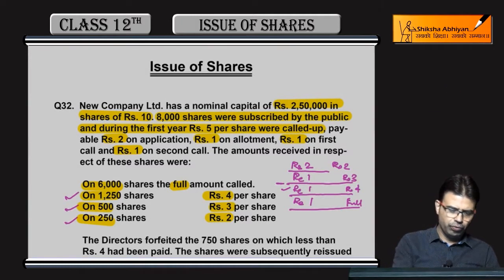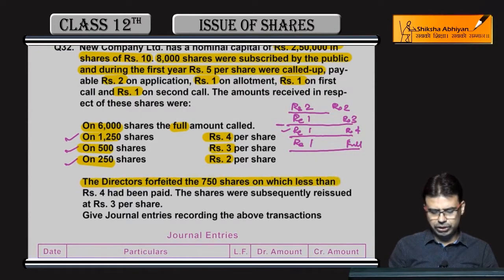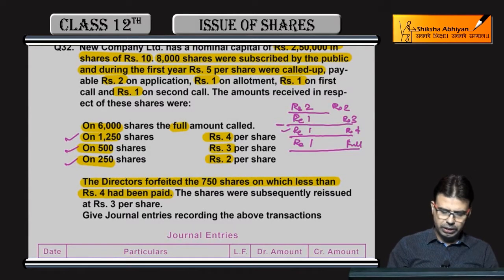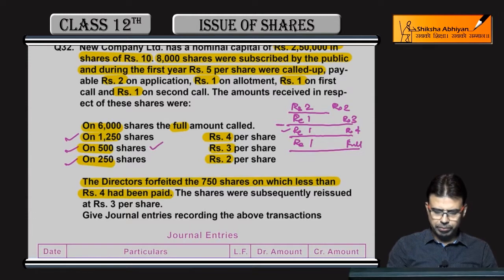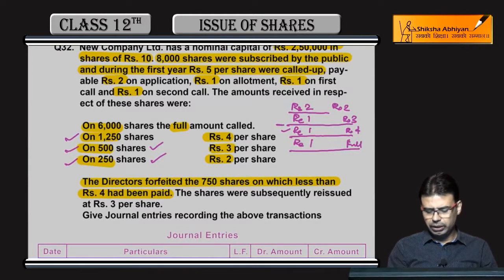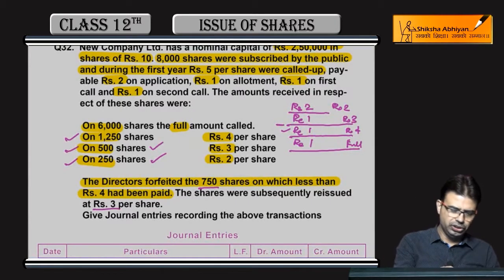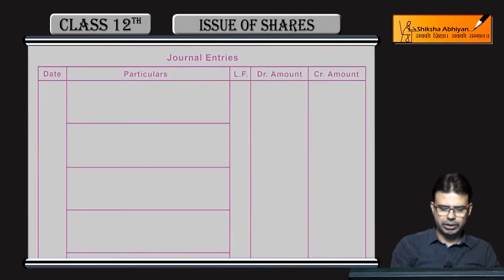Company ne wo shares — the directors forfeited 750 shares, jis par 4 rupees se kam pay hua hai. Dekho bacho: 500 shares aur 250 shares — 500 plus 250 equals 750. So 750 shares forfeit kar liye, aur baad mein re-issue kar diye 3 rupees per share. Theek hai — ab aapko channel entries pass karate hain. Start karte hain bacho.